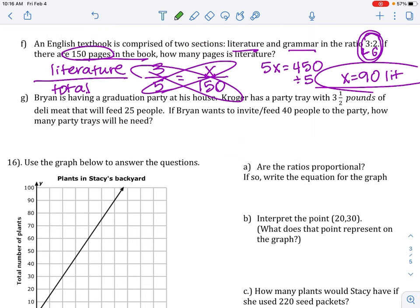Brian's having a graduation party at his house. Kroger has a party tray with 3.5 pounds of deli meat that will feed 25 people. So we're looking at pounds over people. There's our proportion skeleton. Let's put those numbers in. 3.5 pounds, will feed 25 people. Brian wants to invite 40 people. So, that is a denominator word. X on top.